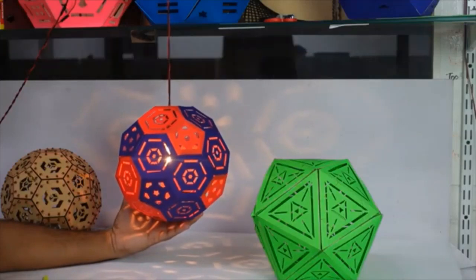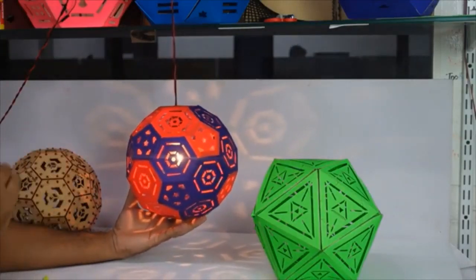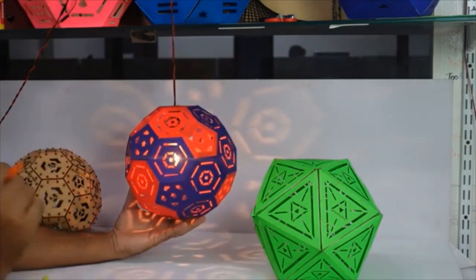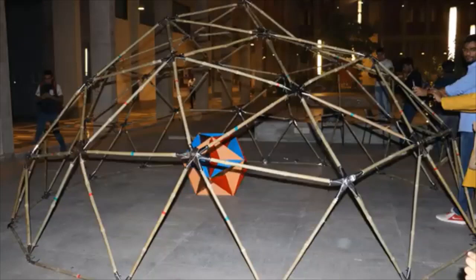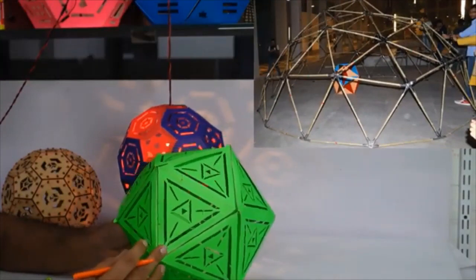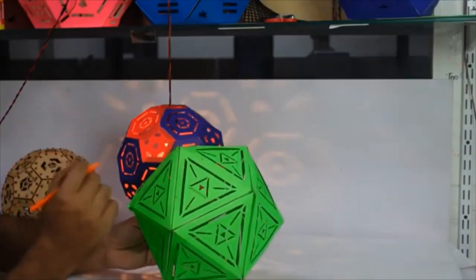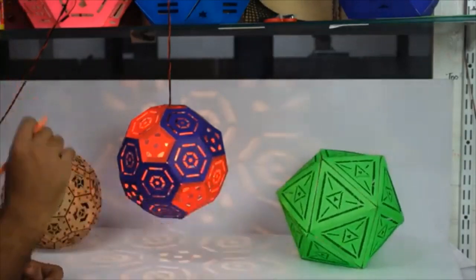The basic structure of geodesic dome is also icosahedron. From this icosahedron, we can make different geodesic domes and geodesic balls. In our lab, we have made different types and sizes of geodesic domes, geodesic balls that range from the frequency of 1 to the frequency of 6.